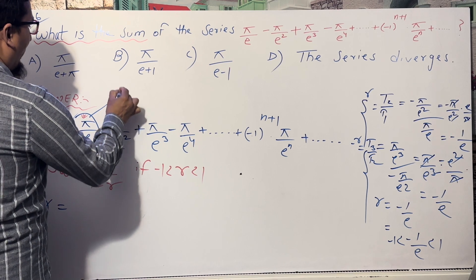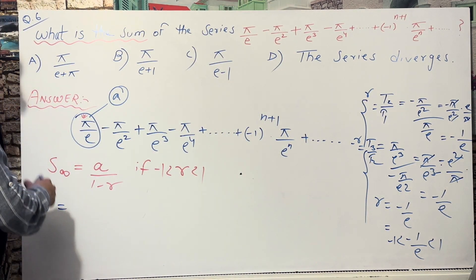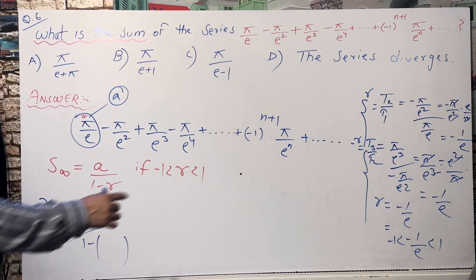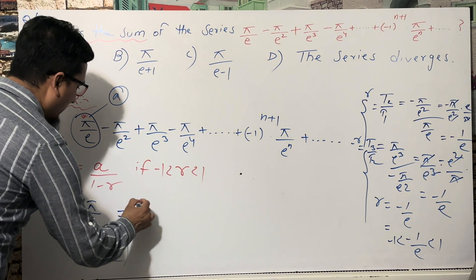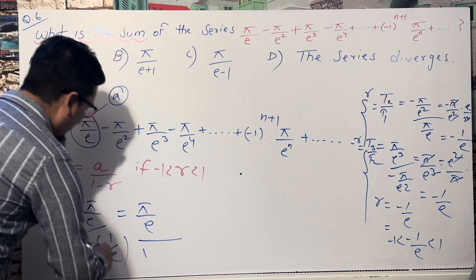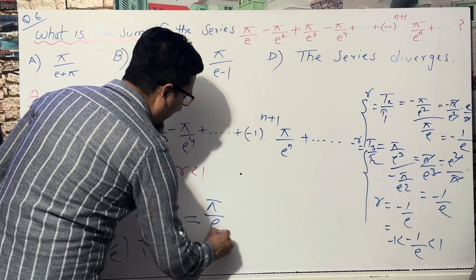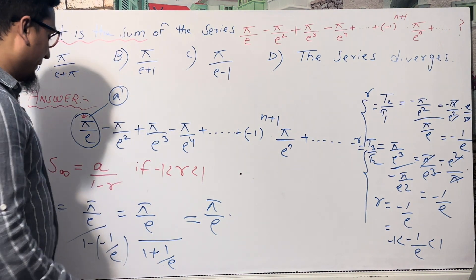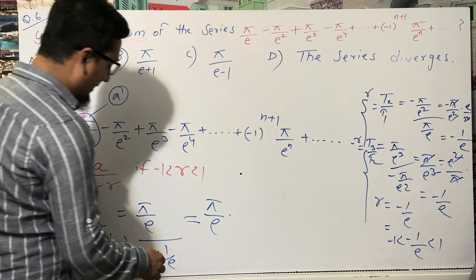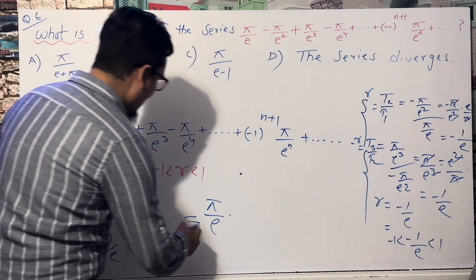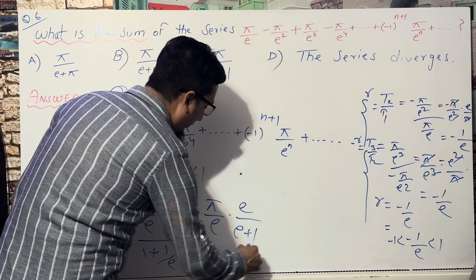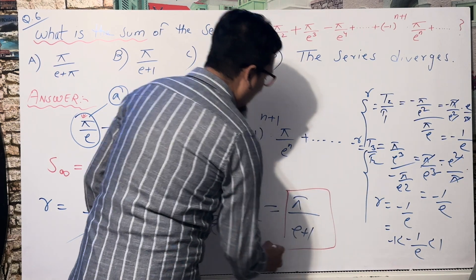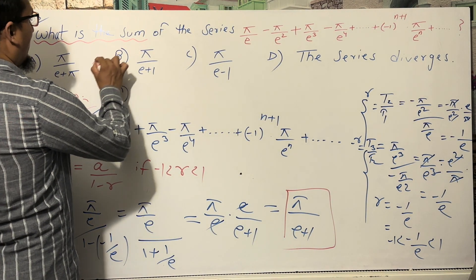Now applying the formula S = a / (1 − r): a = π/e and r = −1/e, so 1 − r = 1 − (−1/e) = 1 + 1/e = (e + 1)/e. Therefore S = (π/e) ÷ ((e + 1)/e) = (π/e) × (e/(e + 1)). The e cancels, giving S = π/(e + 1). So the answer is B: π/(e + 1).